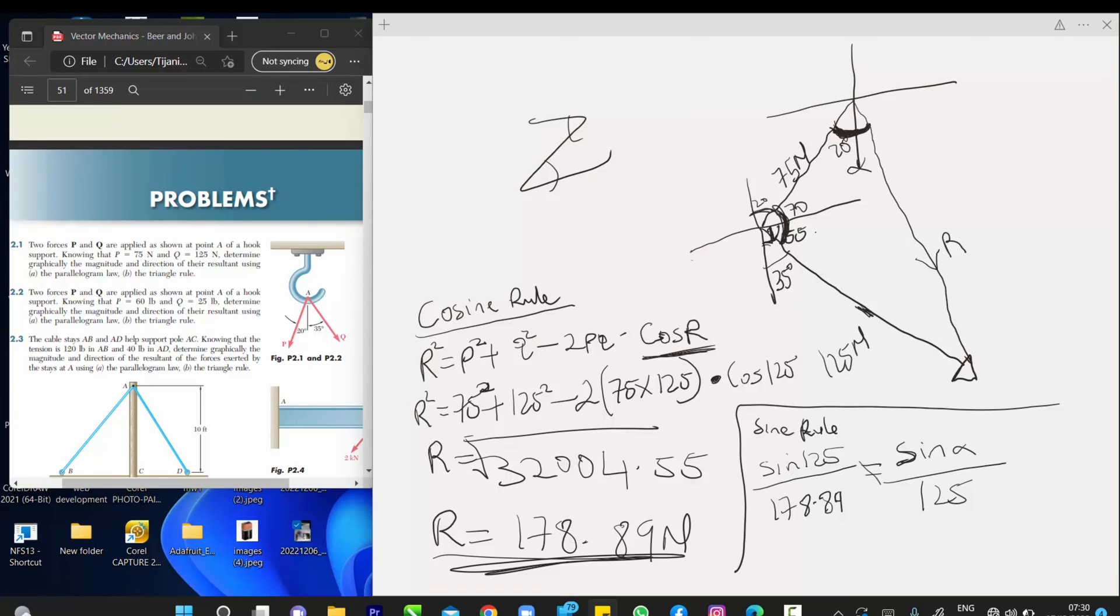So, then you cross multiply, our equation becomes sine alpha is equal to sine 125 times 125. So, this is 5, 125 over, so, 125 times 125 over, 178.89.